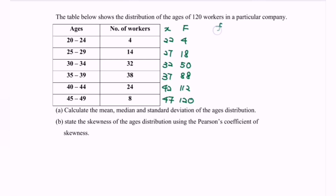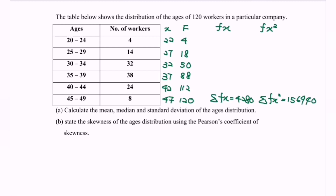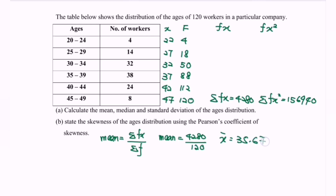Next, find Fx and Fx². The summation for Fx² equals 156940. To calculate the mean: mean = ΣFx / ΣF = 4280 / 120 = 35.67. Rounded to 3 significant figures, the mean is 35.7.